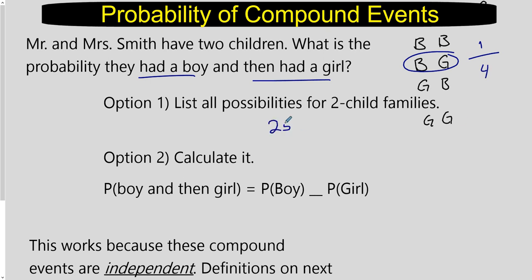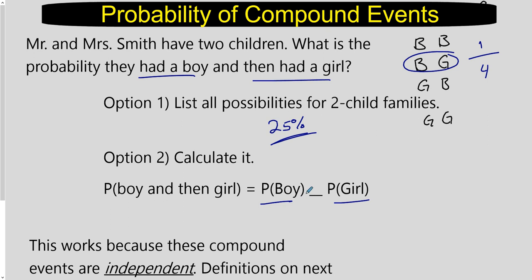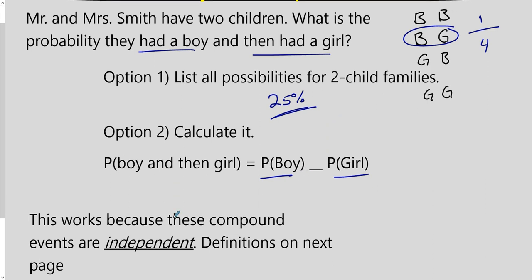So that's 25%. The other approach is to calculate it. Is there a way we could take the probability of having a boy and the probability of having a girl and use an operation to combine those two and end up with 25%? We're going to figure that out in just a second.